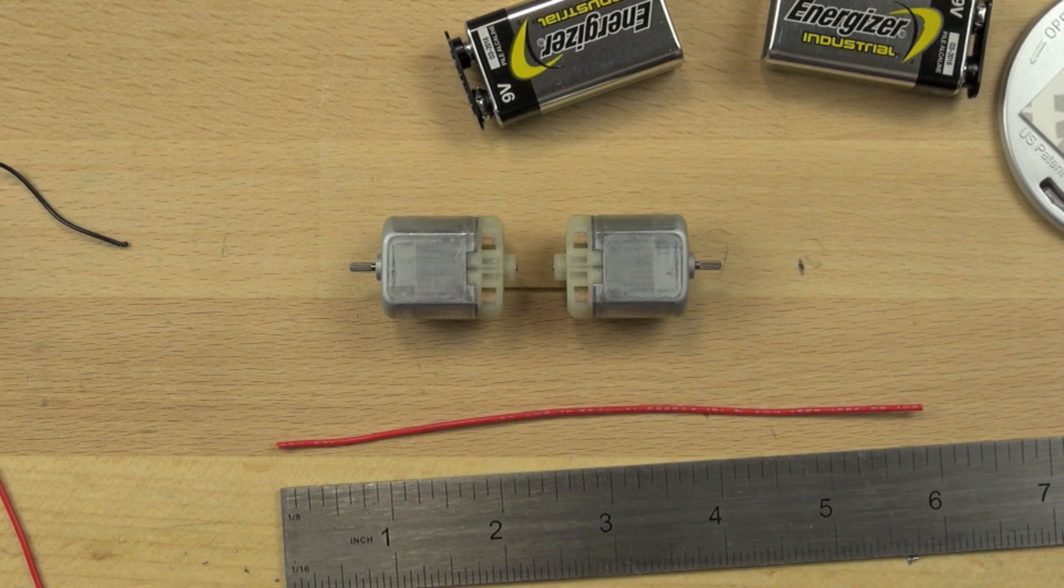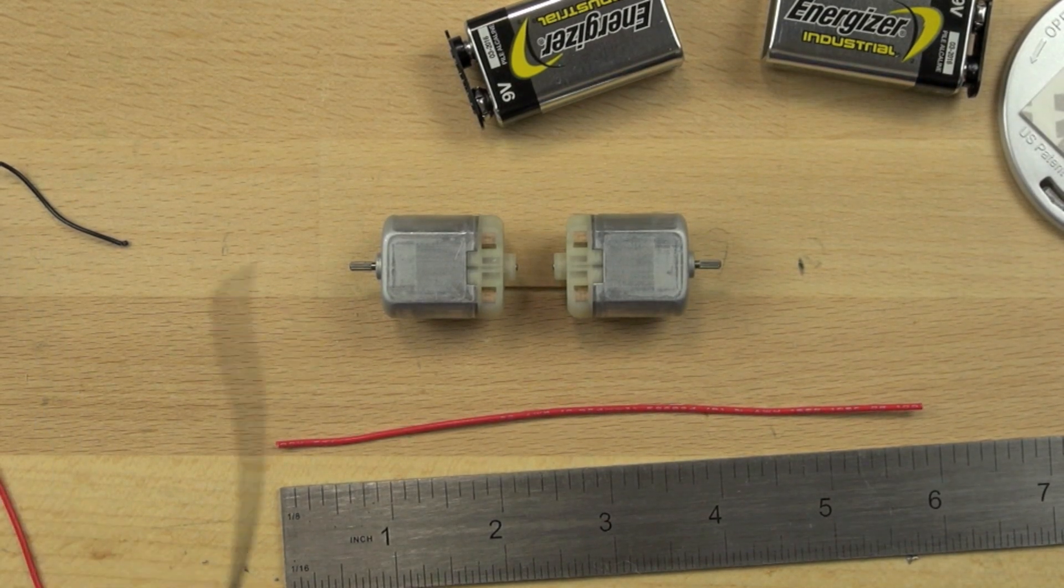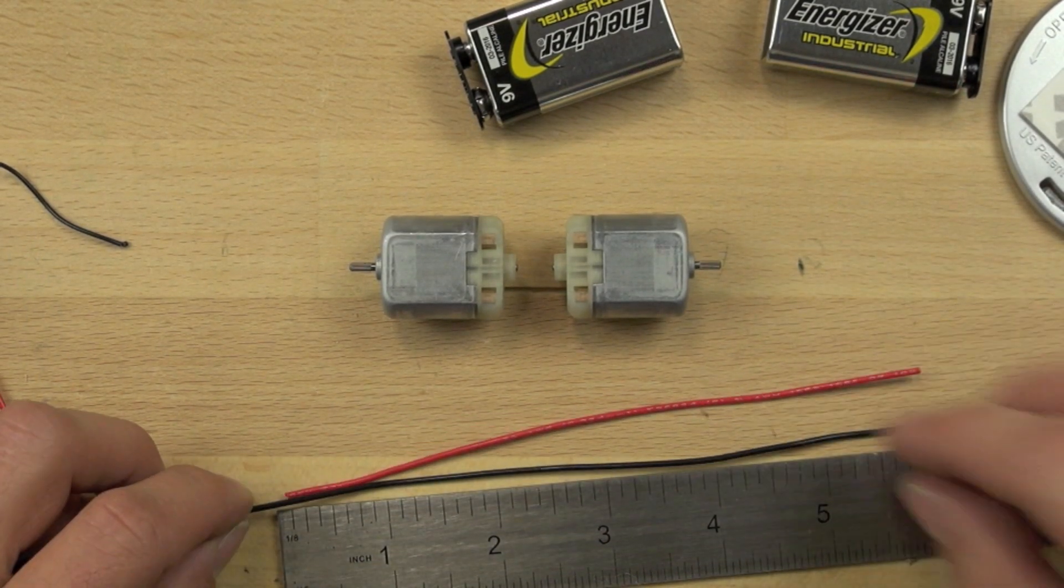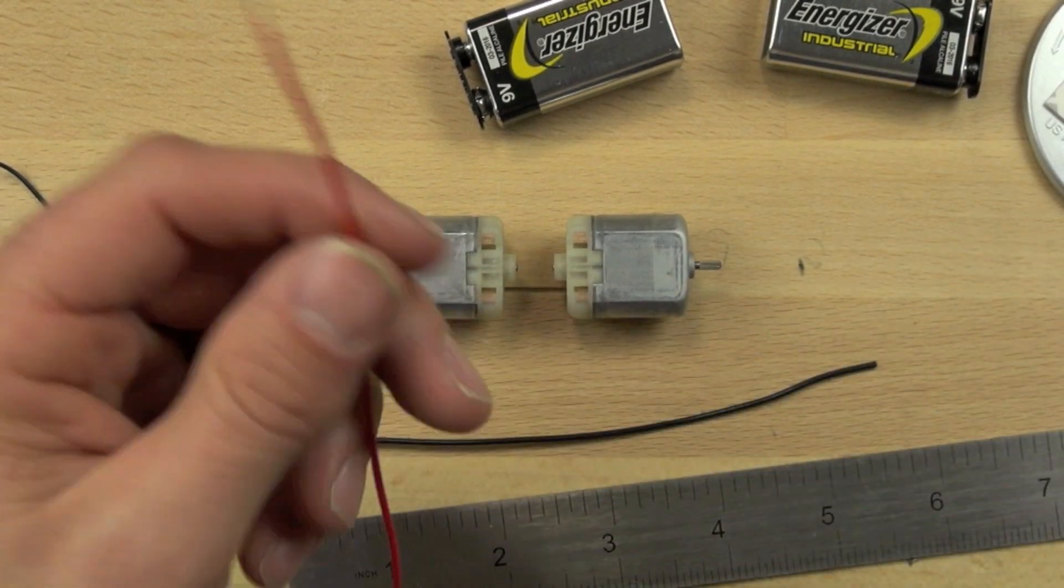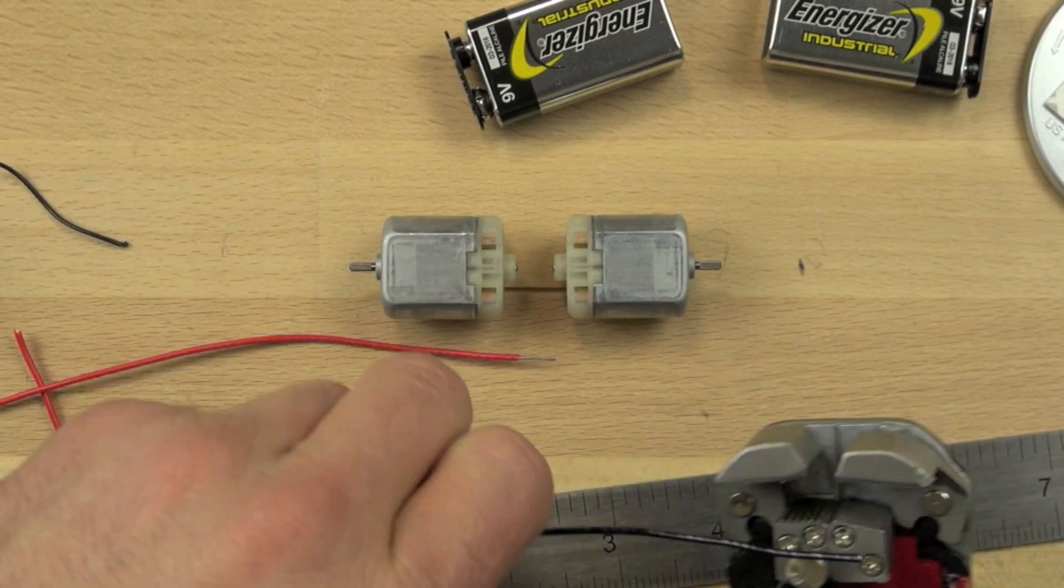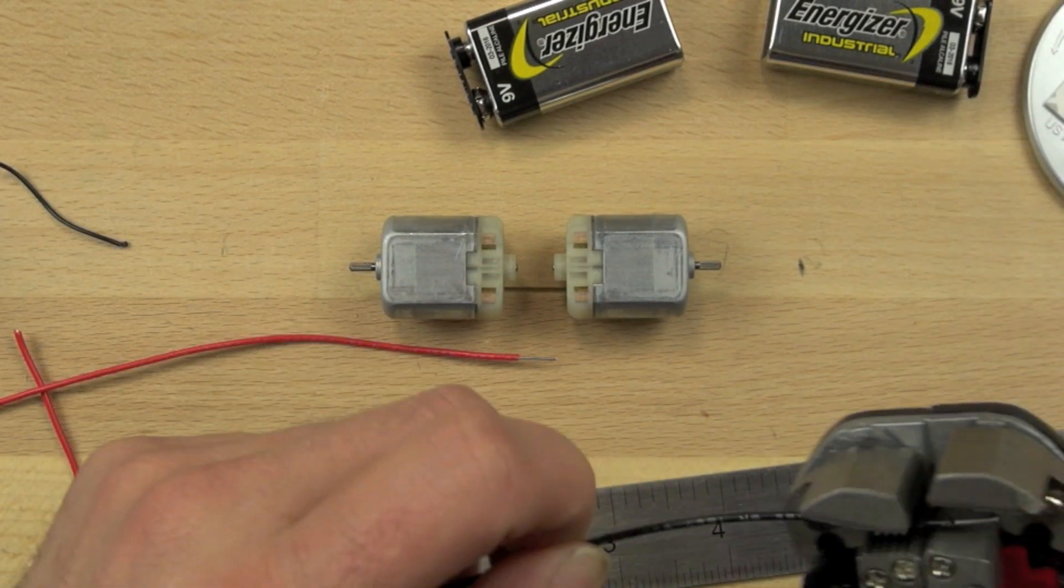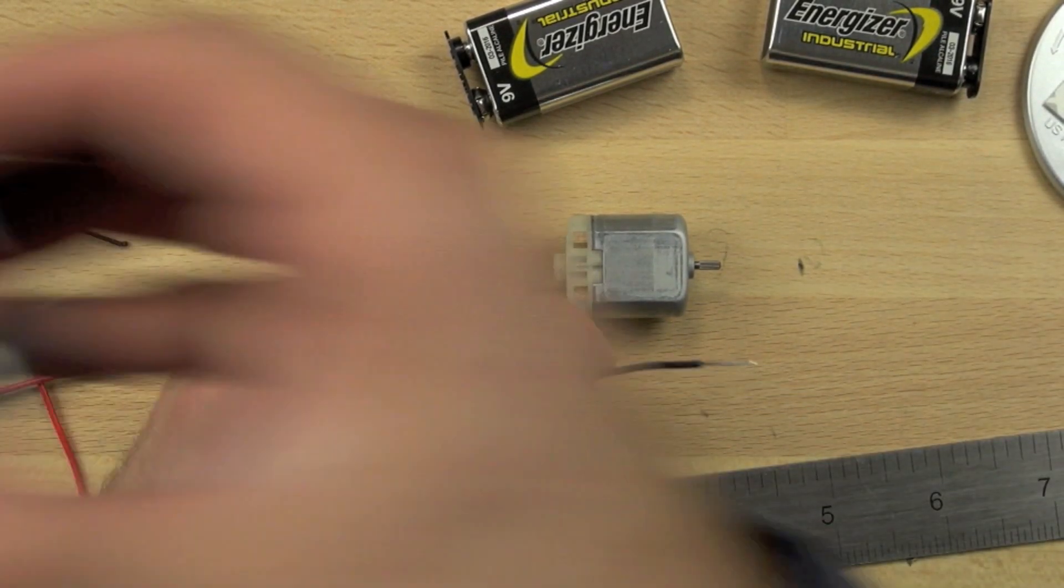We're trimming our wires down to about a six inch length. We'll need four six inch wires: two red ones and two black ones. Then we're going to strip the ends off of the wires and just take about a quarter of an inch of the insulation off the end.